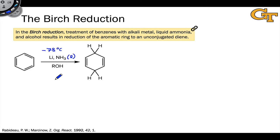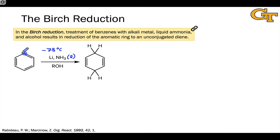These two components are quite often combined with an alcohol, often as solvent. The alcohol and ammonia are going to serve as proton donors, as we'll see following initial reduction of the benzene ring. Looking at this reaction from a bird's eye view, it results in reduction of the aromatic ring — specifically, certain carbons go from SP2 hybridization, unsaturated in the starting benzene, to saturated SP3 hybridized in the product.